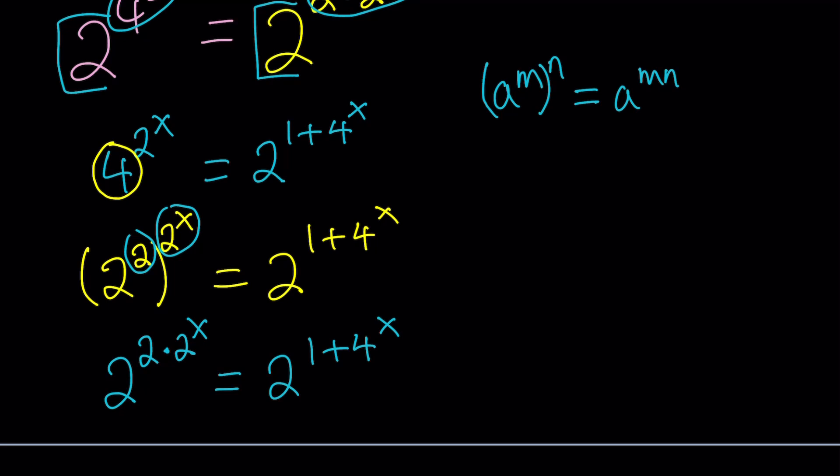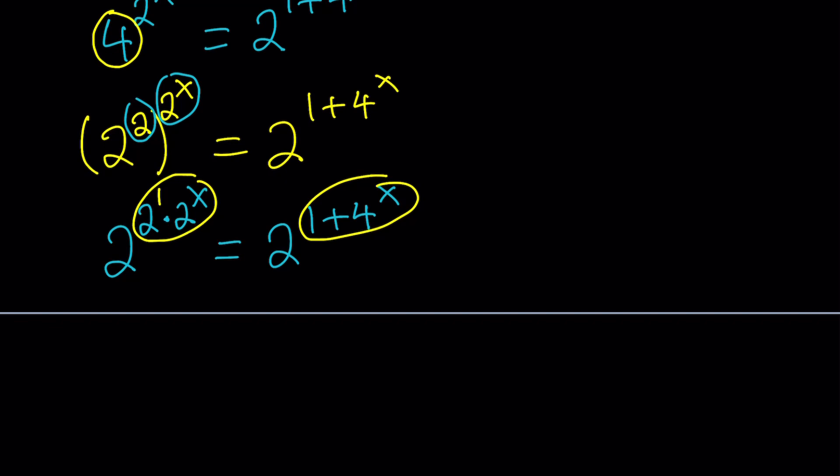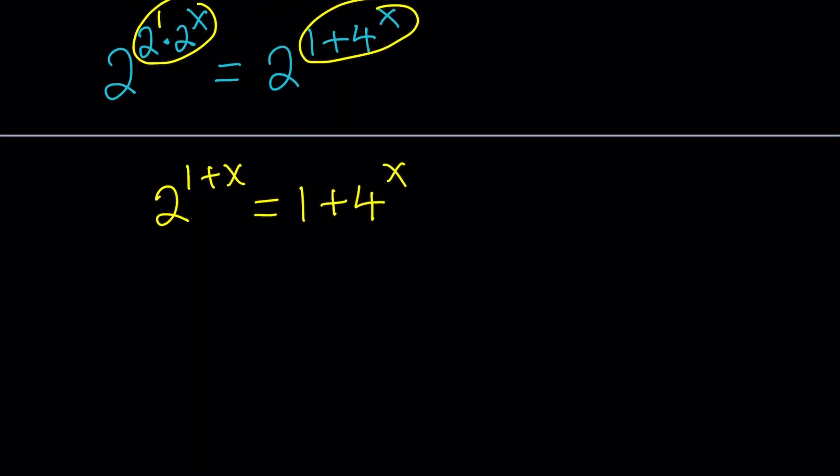So when we multiply, we're going to get 2 to the power 2 times 2 to the power X equals 2 to the power 1 plus 4 to the power X. Awesome. What do we get from here? Let's see. The bases are equal, so we can go ahead and compare the exponents one more time. And this kind of gives us, since this is 2 to the first power, we get 2 to the power 1 plus X equals 1 plus 4 to the power X. That's kind of interesting, isn't it?